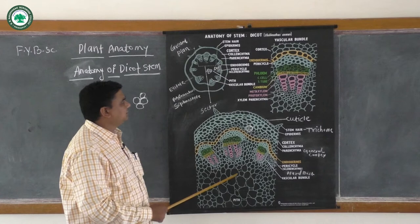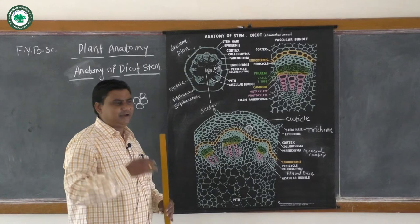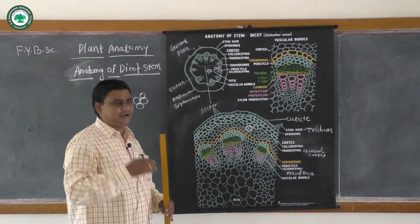So friends, the anatomy of the dicot stem or the transverse section of the dicot stem shows the particular epidermis, then the cortical region, then endodermis and then the vascular bundle. The vascular bundle is of the conjoint collateral and open type.